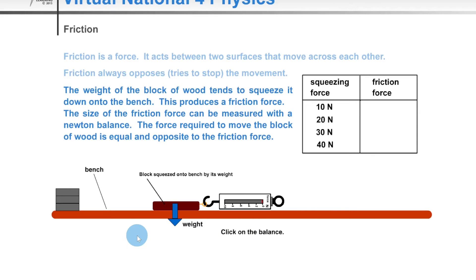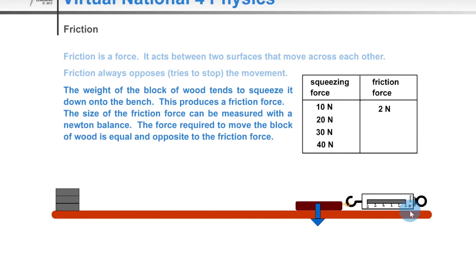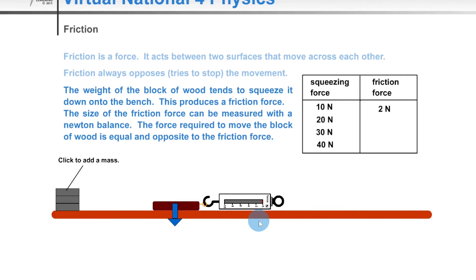Another simulation here involves an experiment where you've got some masses, a bench, a Newton balance, and this block here. The block is simply sitting on the surface. We can measure the force of friction using the Newton balance because the force required to move the block of wood is equal and opposite to the friction force. If I click on the balance, you'll see that we get a value of 2 Newtons for the friction force acting against the direction of motion.